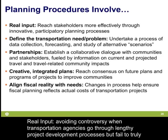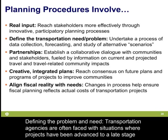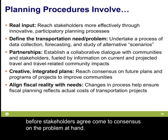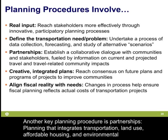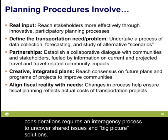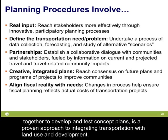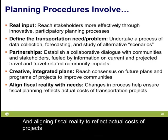Planning procedures involve several key elements. Real input: avoiding controversy when transportation agencies fail to truly capture community input. Defining the problem and need: transportation agencies are often faced with situations where projects have been advanced to a late stage before stakeholders can agree on the problem. Partnerships: planning that integrates transportation, land use, affordable housing, and environmental considerations requires an interagency process. Creative integrative plans: building interdisciplinary project teams and working together to develop plans integrating transportation with land use and development, while aligning fiscal reality to reflect actual costs of projects.